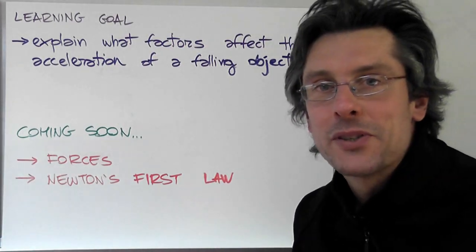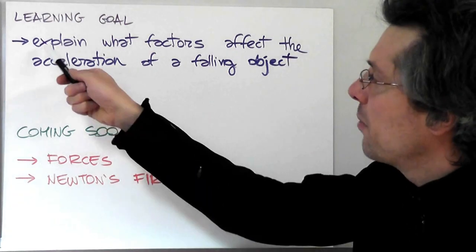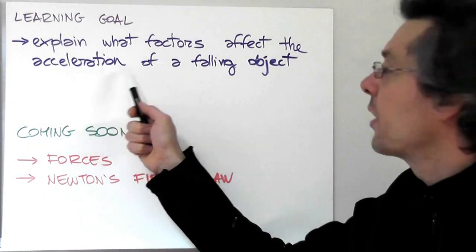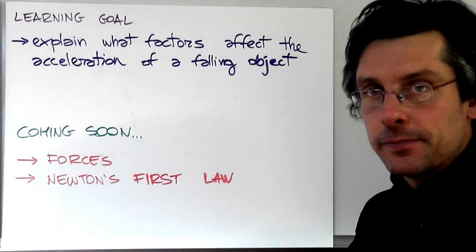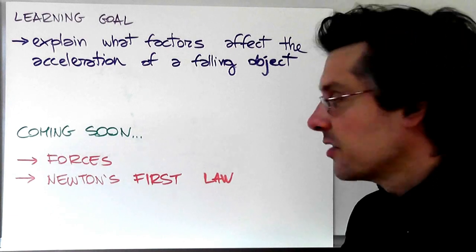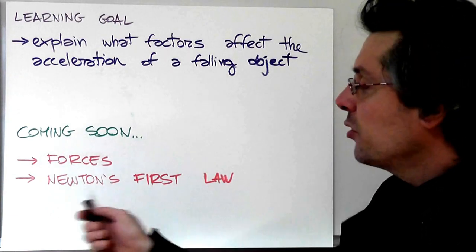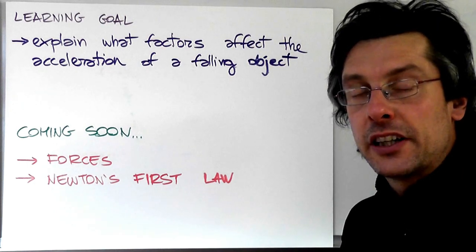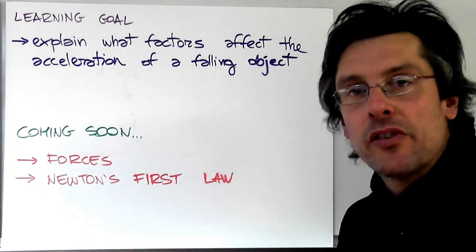So, what was the learning goal of this lesson? By the end of this lesson, you should be able to explain what factors are affecting the acceleration of an object falling under the effect of gravity. In the next lesson, we are going to see what is a force, and we are going to investigate the three laws of motion formulated by Sir Isaac Newton. And obviously, we are going to start with the first law.